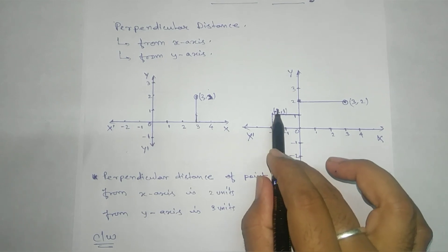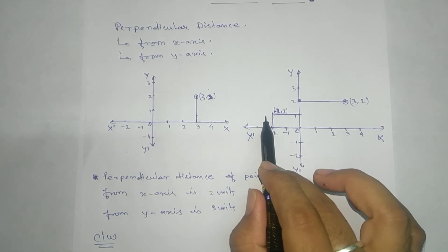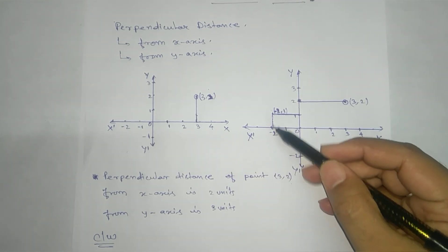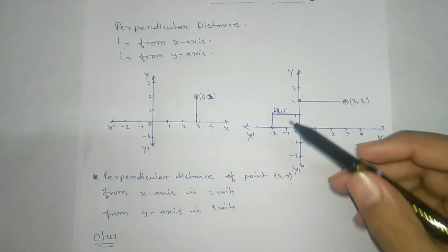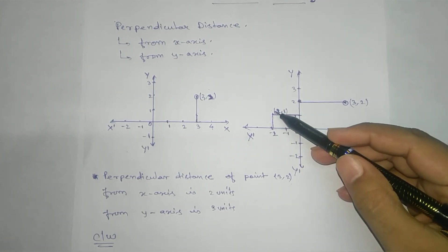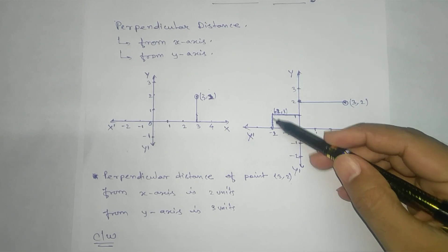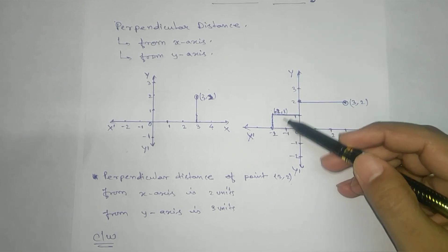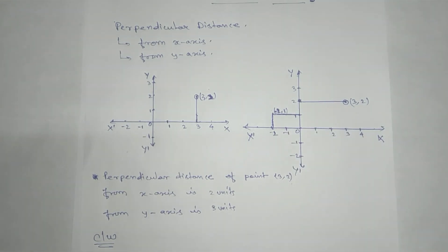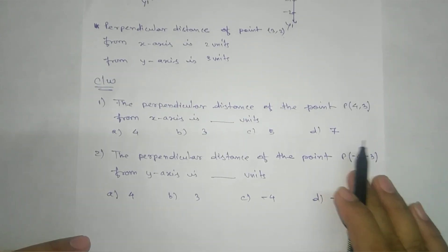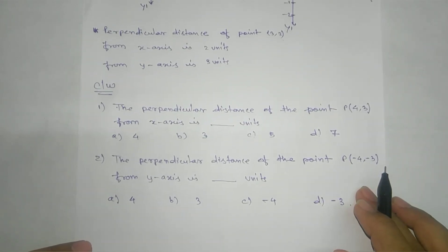Remember: distance is never negative — do not write the negative symbol. The distance of the point (-2, 1) from the x-axis is one unit, which is the y-coordinate value of one.